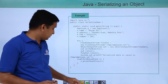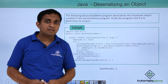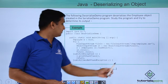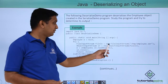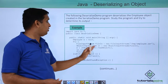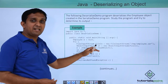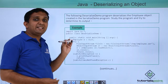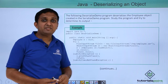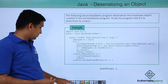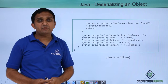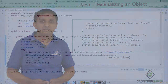Now to deserialize the object, a FileInputStream object is created and the path of the file is passed. Then an ObjectInputStream object is created and the FileInputStream object is passed to it. Using the readObject method of ObjectInputStream, the object is retrieved and stored into a reference E. However, typecasting is needed because the return type of readObject is Object. On the next slide, the contents of the retrieved object E are displayed.